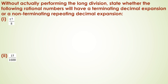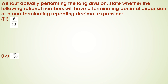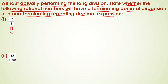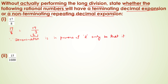Let us see a problem where, without actually performing the long division process, we determine whether the following rational numbers have a terminating or non-terminating repeating decimal expansion. The number is 17 by 8, which can be written as 17 upon 2 to the power 3. Since the denominator is in powers of 2 only, it will have a terminating decimal expansion.